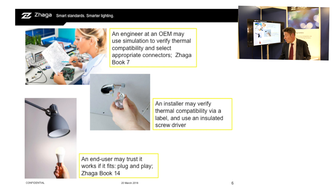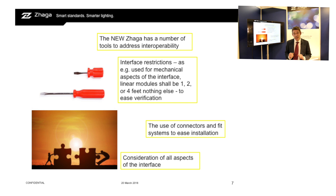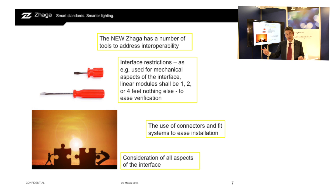What tools does the new ZAGA have to address interoperability? There are a number of them. First: interface restrictions — simplify the interface. In book 7, we only allow linear models of 1, 2, and 4. Nothing else — no 1.5, no 2.5. Simple interfaces by restricting the variation in the market.